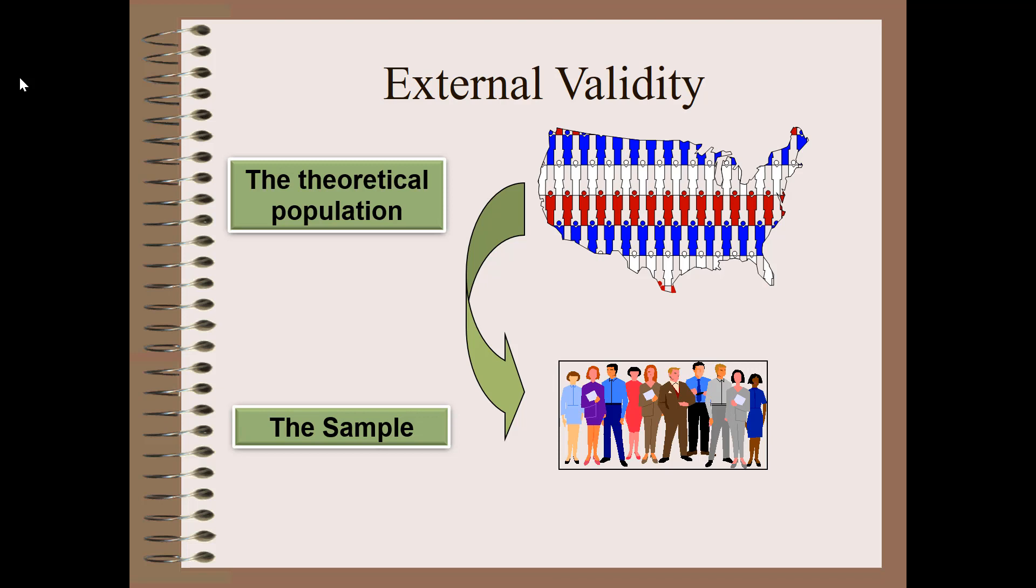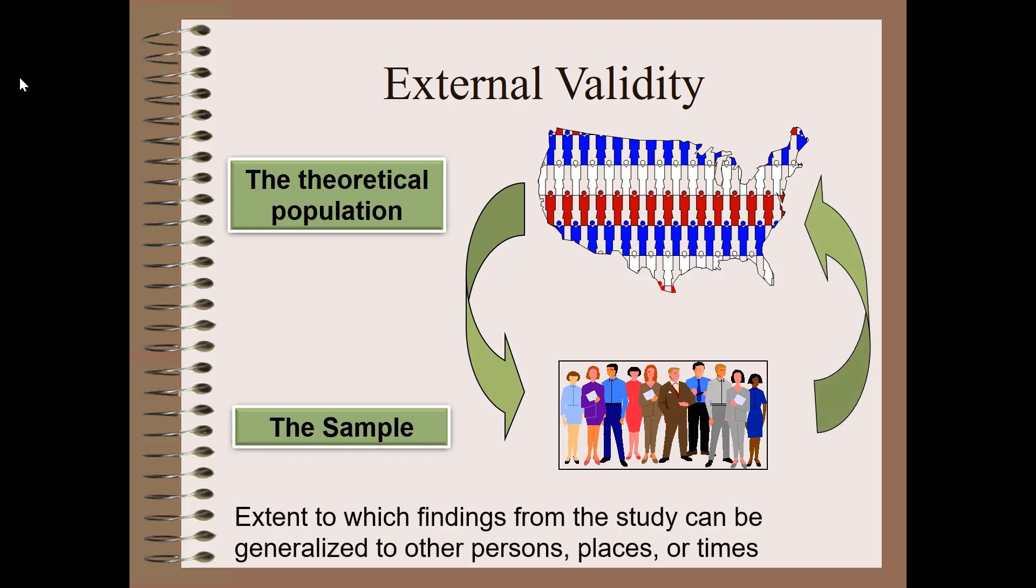The external validity question is the extent to which the findings from the study using just that sample can be generalized back up to that theoretical population or to other people, places, and time. Sometimes we refer to this as generalizability. How well can we say that the findings from this sample can be applied to the larger theoretical population? The answer depends on the type of sampling method used by the researcher.